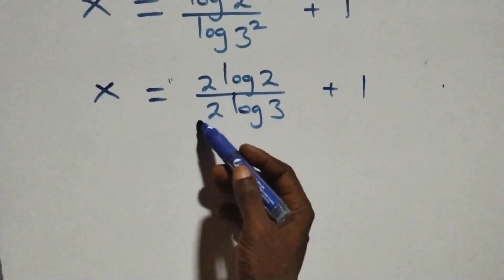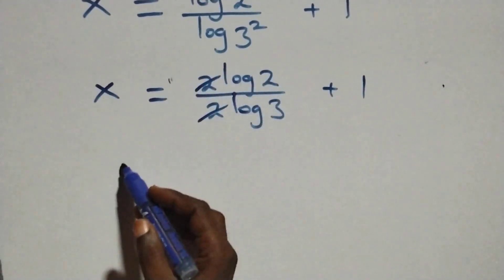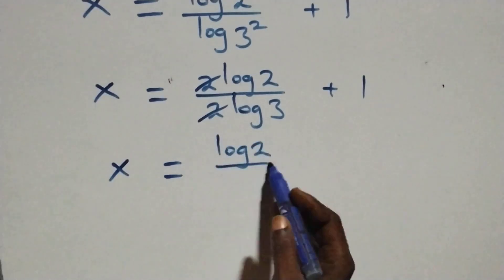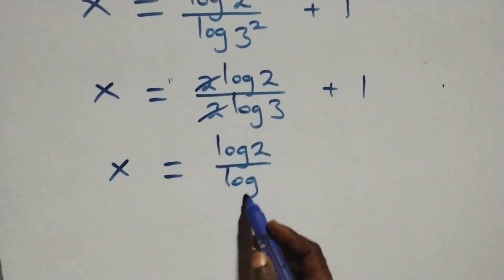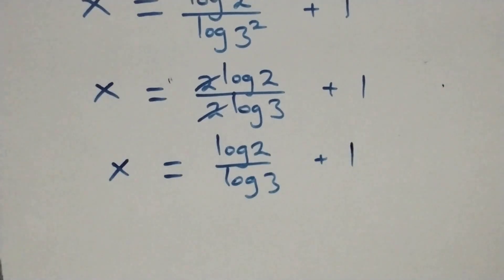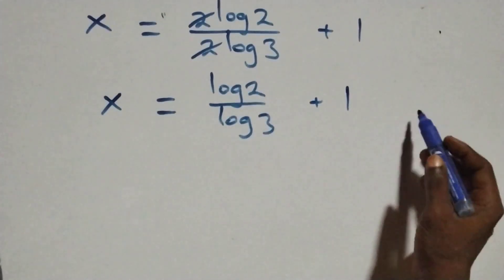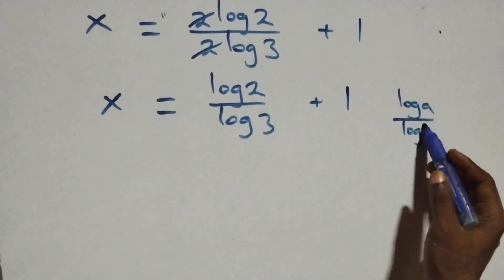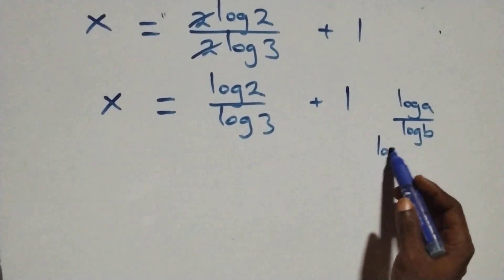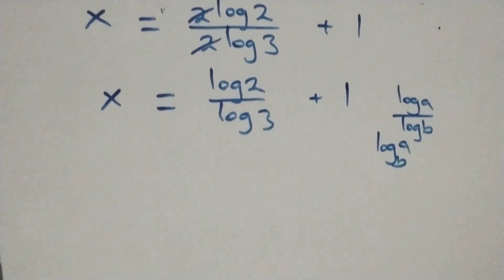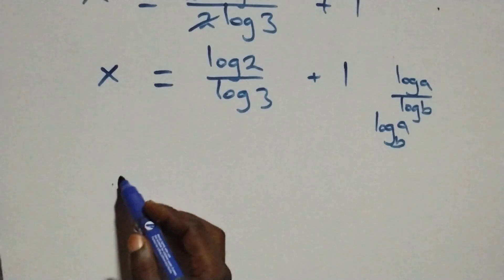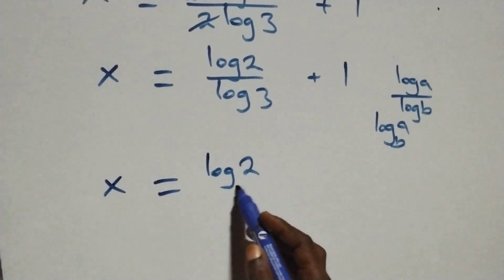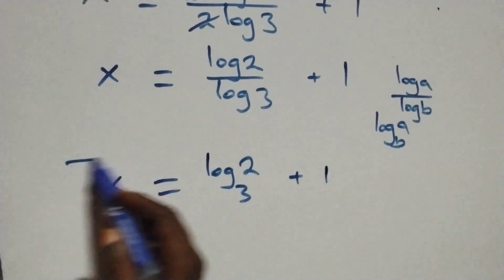The 2s cancel each other and we have x equals log 2 over log 3 plus 1. Applying the change of base formula — when we have log a over log b, it is the same as log a to base b — what we have becomes x equals log 2 base 3 plus 1.